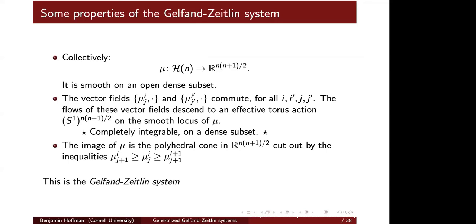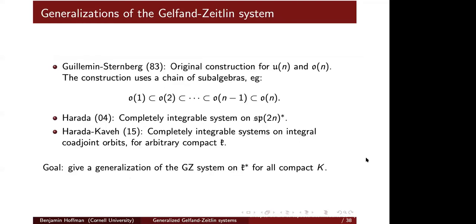The moment map image of mu is exactly a polyhedral cone inside R^{n(n+1)/2}, cut out by all the interlacing inequalities, for i and j ranging over all possible values. The cone cut out by these inequalities is called the Gelfand-Zetlin cone. Putting together the torus action and the moment map image justifies the name: the Gelfand-Zetlin integrable system.